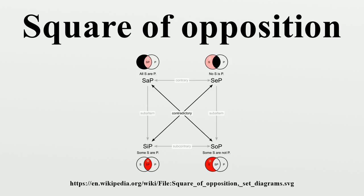In traditional logic, a proposition is a spoken assertion, not the meaning of an assertion, as in modern philosophy of language and logic. A categorical proposition is a simple proposition containing two terms, subject and predicate, in which the predicate is either asserted or denied of the subject.